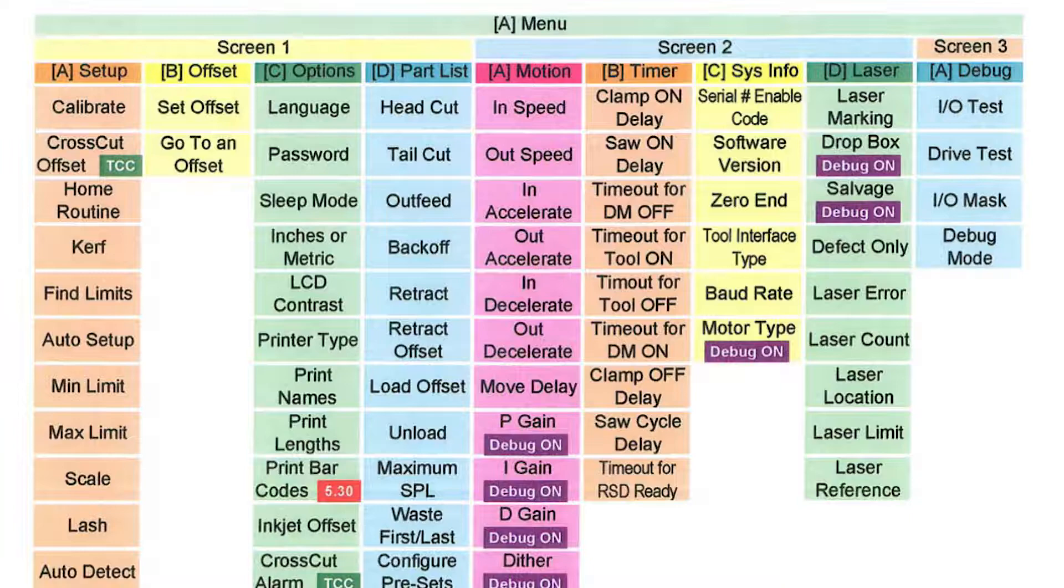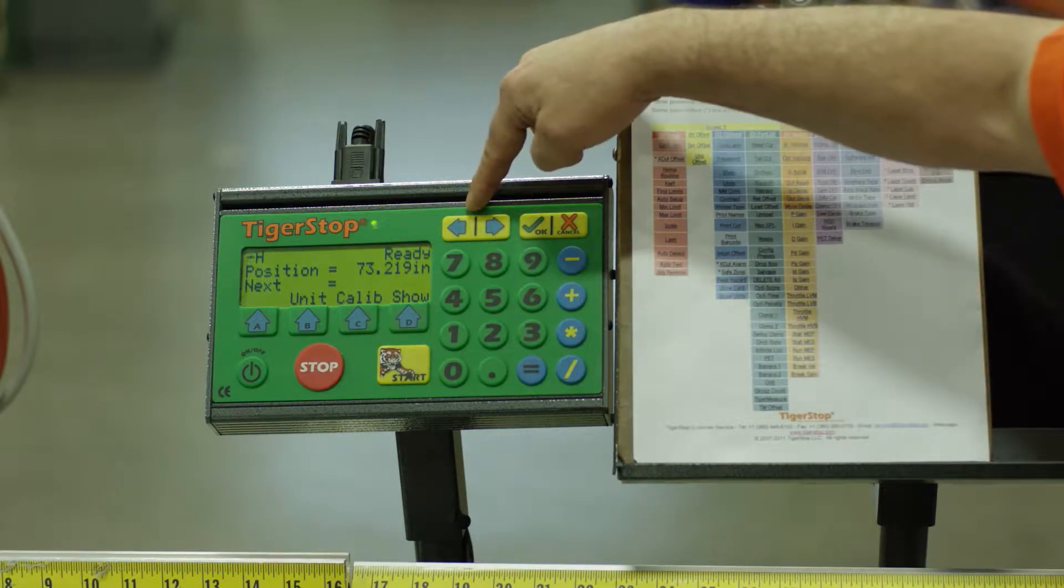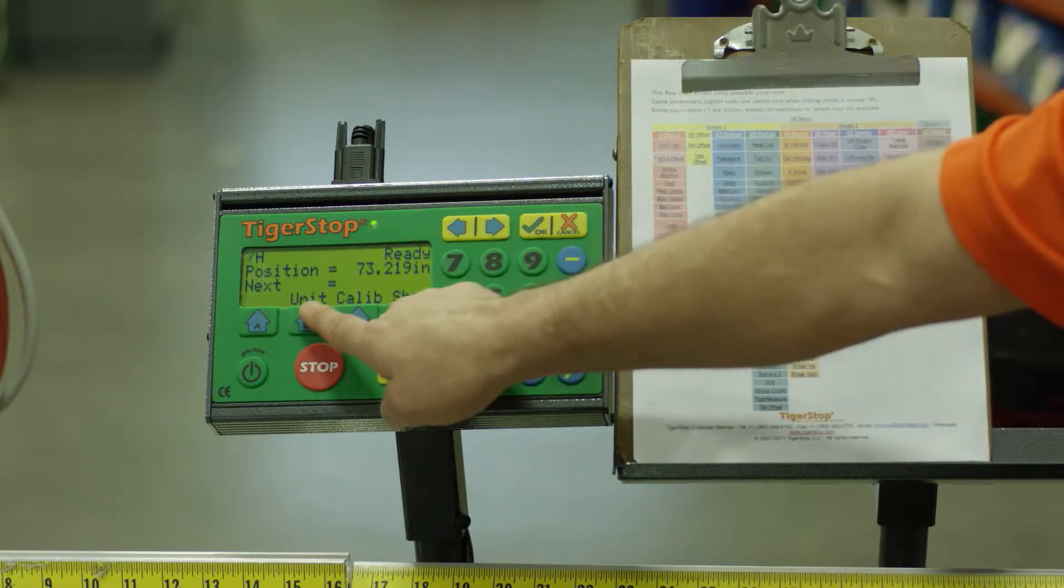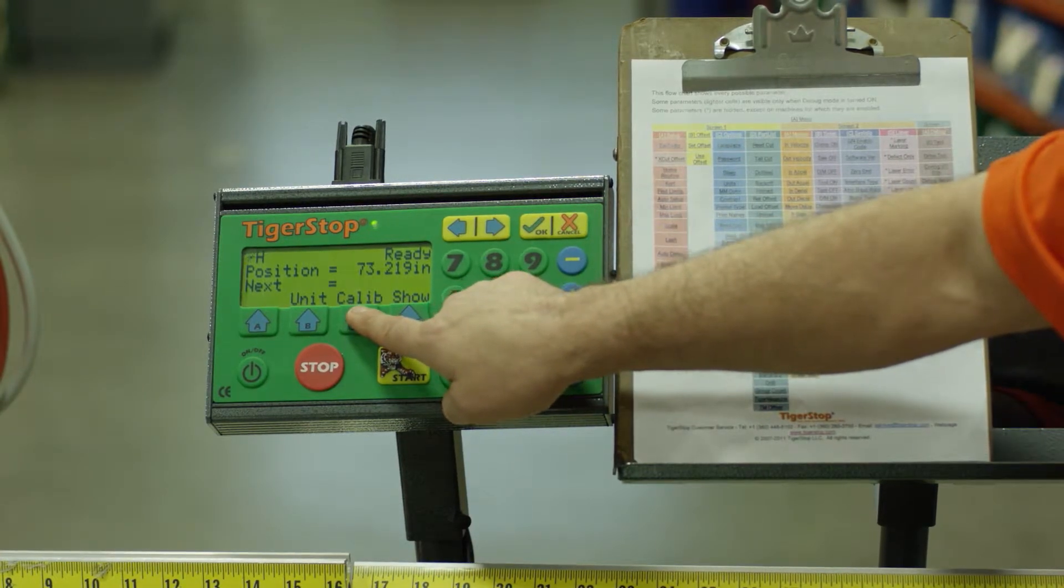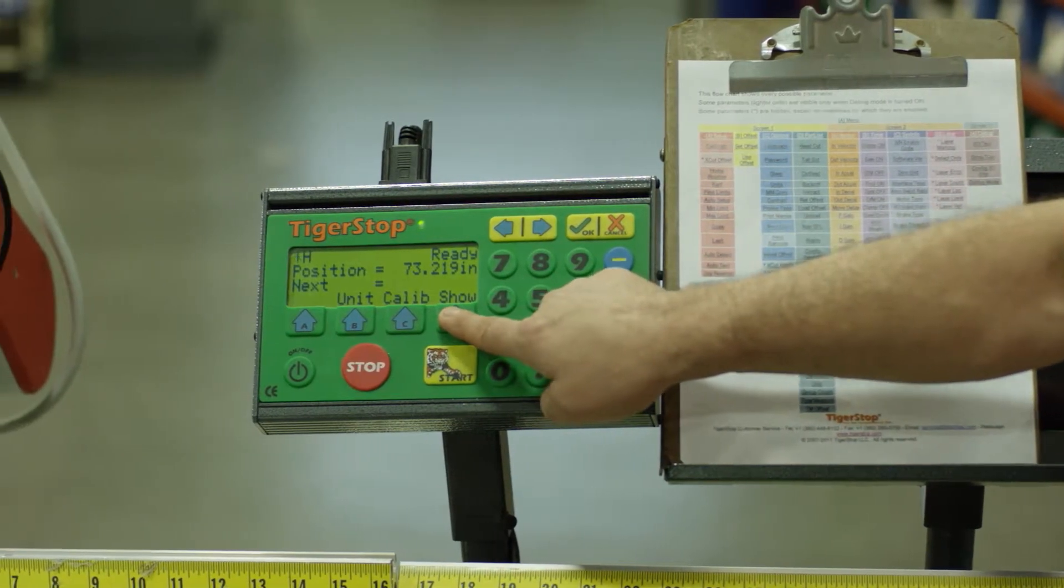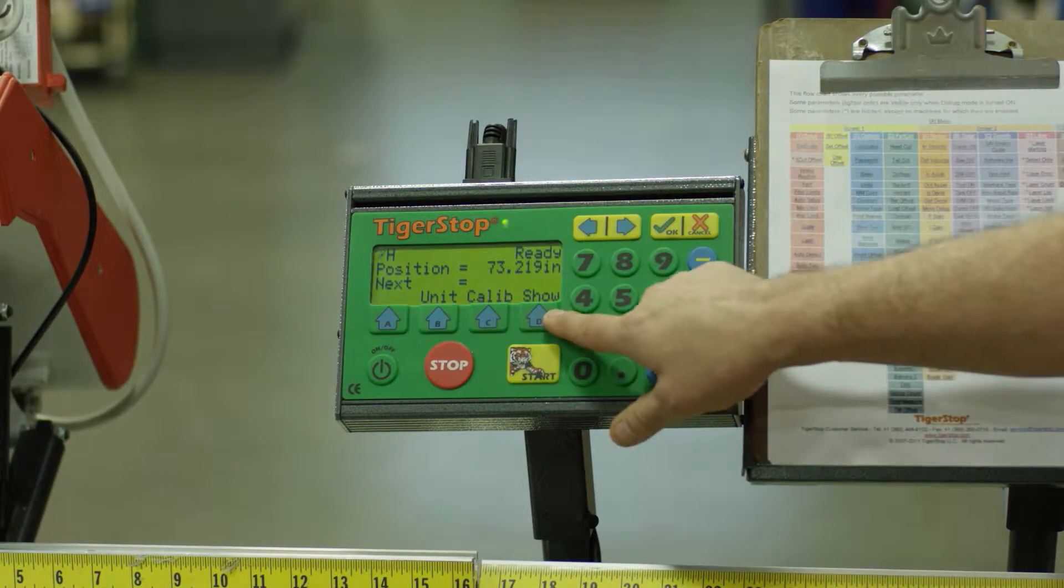Now we're going to show you how to access these on your Tigerstop. The Tigerstop has what's called the ready screen. You should be seeing unit, calibration or show or at bare minimum calibration and show. If not, press the cancel button three times and this screen will appear.